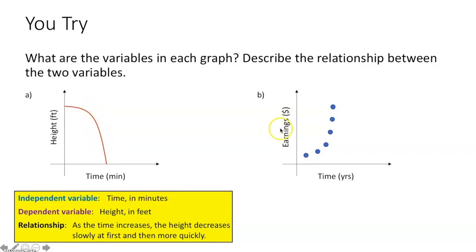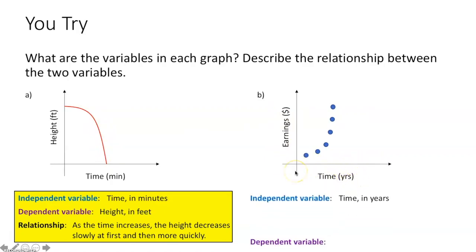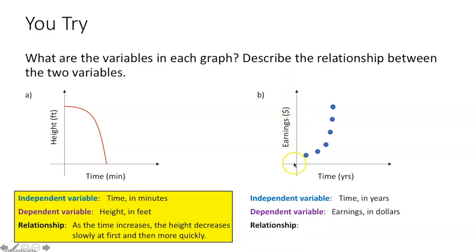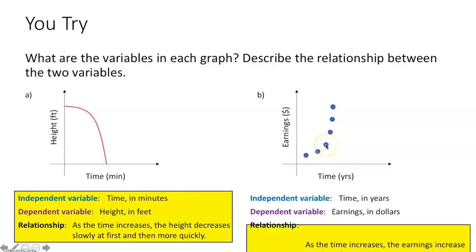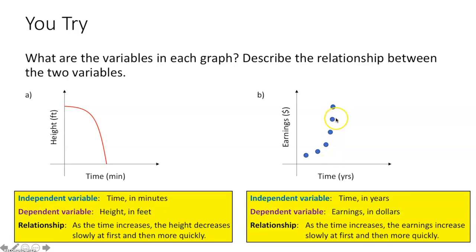For part B, our independent variable along the x-axis is time in years. Our dependent variable along the y-axis is earnings in dollars. As time increases, your earnings increase slowly at first and then more quickly over time.